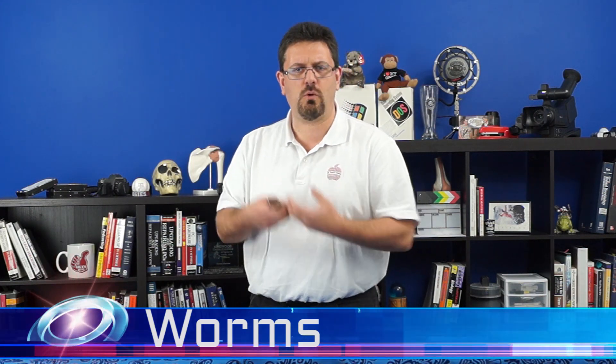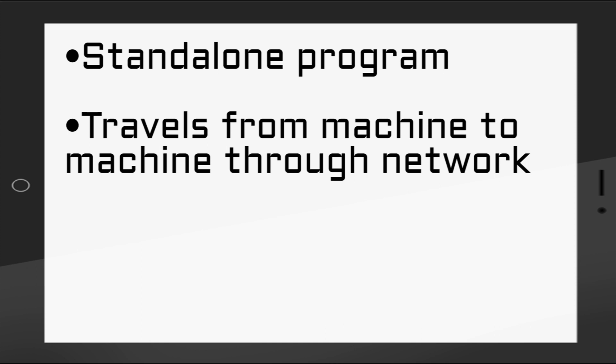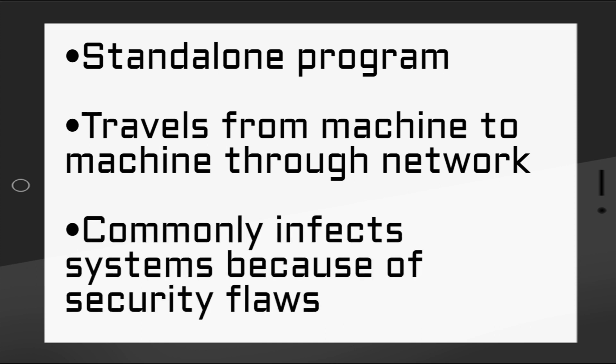We had viruses, and now we have worms. Worms are slightly different than viruses. The big key difference is that a worm is self-replicating — these are stand-alone programs that can infect an entire network with hundreds of thousands of copies of itself in no time at all. What usually occurs is that people's computers are not up to date and don't have the latest security patches. Worms take advantage of security flaws, get into your computer, replicate themselves, spread along the network, and crash stuff. All sorts of naughty, bad things.